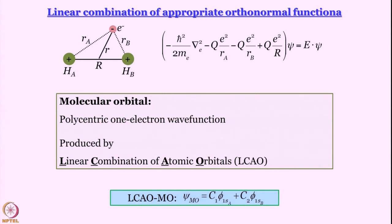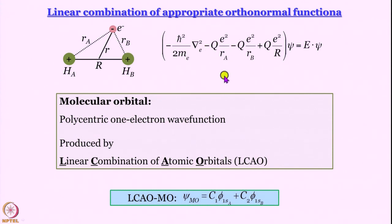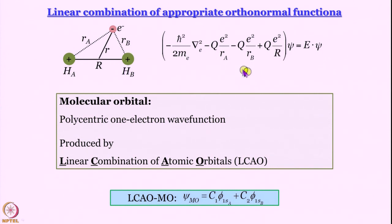Here we have minus h-cross squared by 2m_e times del-squared, which is the kinetic energy term of this lone electron. Then minus q_e squared by r_a and minus q_e squared by r_b are the potential energy terms for the attraction of this electron by the two nuclei, and q_e squared by capital R, where capital R is the internuclear separation, is the term for internuclear repulsion.